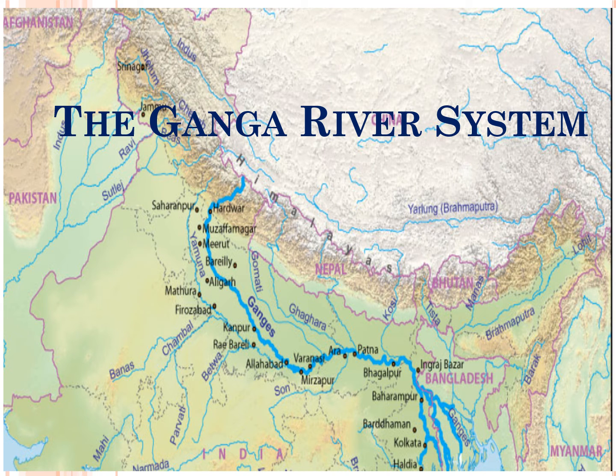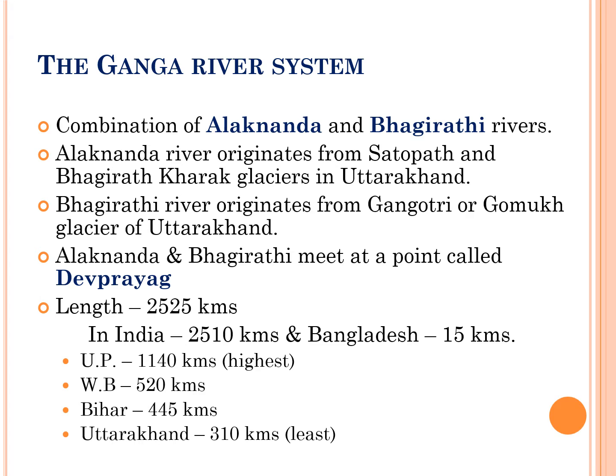Let us discuss the important second Himalayan river, which is the Ganga river system. The Ganga river system includes the Ganga river and many of its tributaries. This system drains a vast area that includes the middle Himalayas in the north, the northern Indian plateau in the south, and the Ganga plain in the middle.